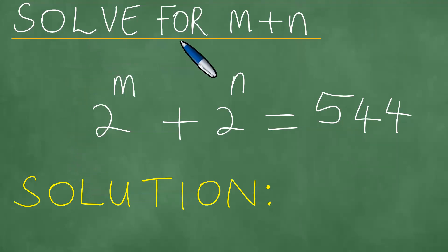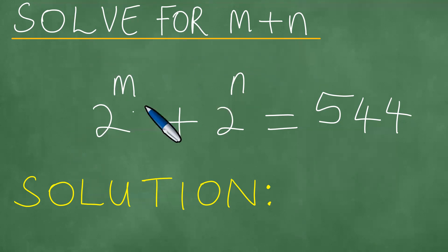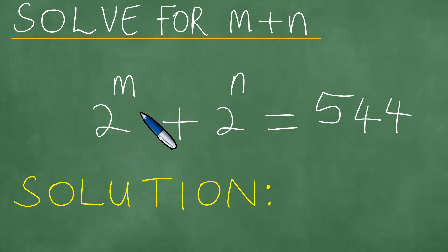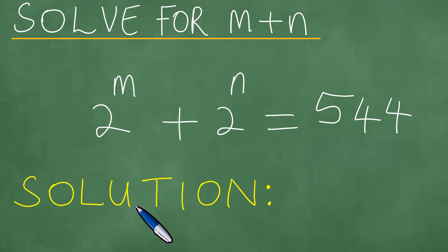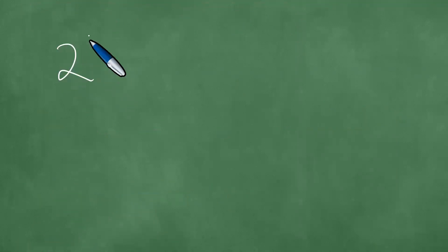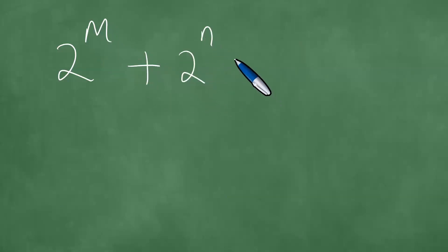We need to solve for m plus n. We have been given that 2 to the power m plus 2 to the power n equals 544. We present a solution to this exponential equation in a step-by-step fashion.